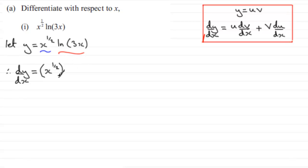Now when it comes to differentiating the natural log of 3x, it's going to be 1 over 3x multiplied by the differential of 3x which is 3. And what I've done here is I've used the chain rule.